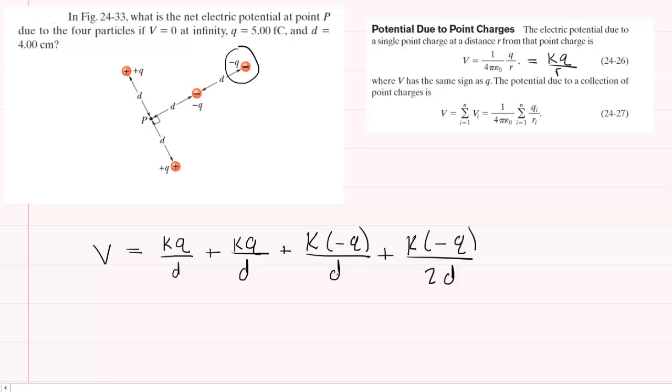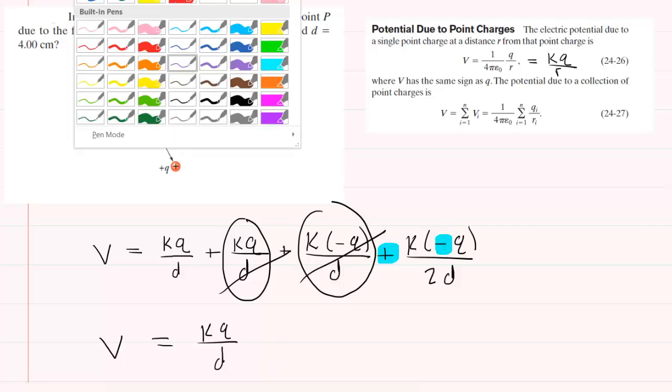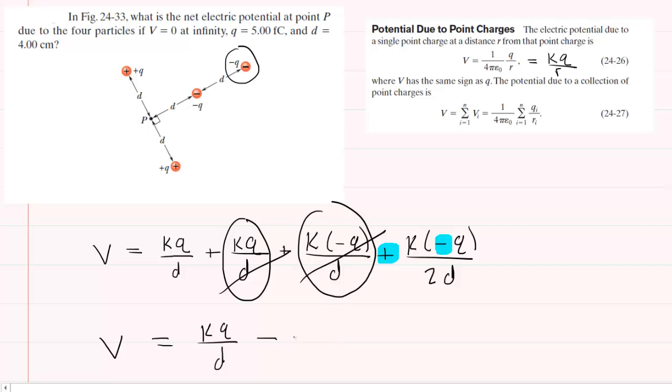Now what we're going to do is simplify this equation. You'll notice that this term and this term are opposites. One's positive and the other is negative. So in fact these can actually cancel out. So now we simply have kq over d. And in addition, this positive and this negative together make a subtraction or a minus sign. So we'll actually have minus kq over 2d.